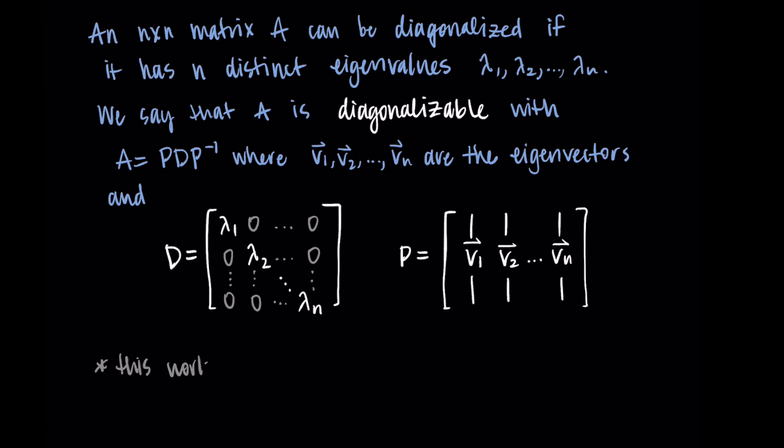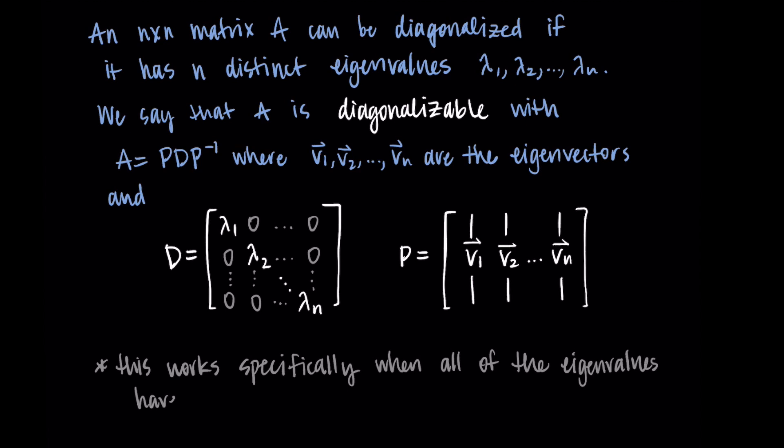This is a really incredible result. It says that if we have an n by n matrix A, as long as it has exactly n eigenvalues that are all distinct, we can diagonalize A and rewrite it using those eigenvalues and eigenvectors. This works specifically when all eigenvalues have multiplicity 1, meaning no repeated eigenvalues. As long as we have n distinct eigenvalues, we can break A into P times D times P-inverse.